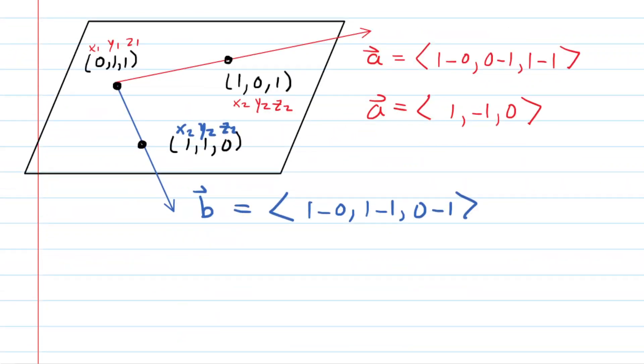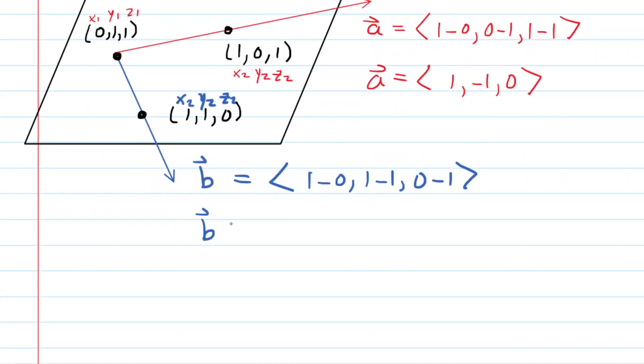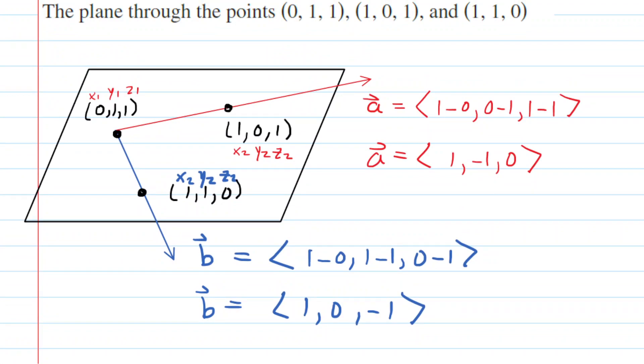And when we simplify that, we have vector B equaling 1, 0, negative 1. Now you might wonder, why would we do that? Why would we come up with two vectors on this plane?